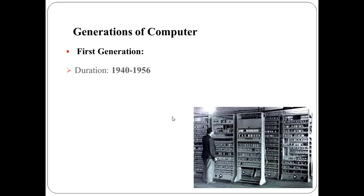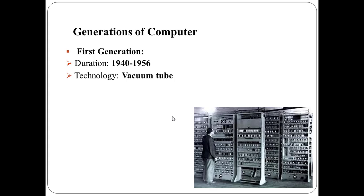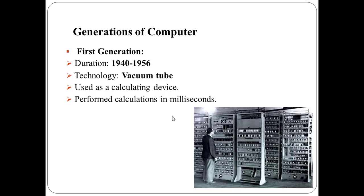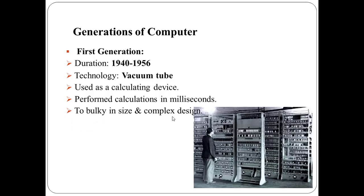The first generation computers were vacuum tube based machines. The duration of the first generation is from 1940 to 1956. These were large in size, expensive to operate, and instructions were written in machine language. Their computation time was in milliseconds.